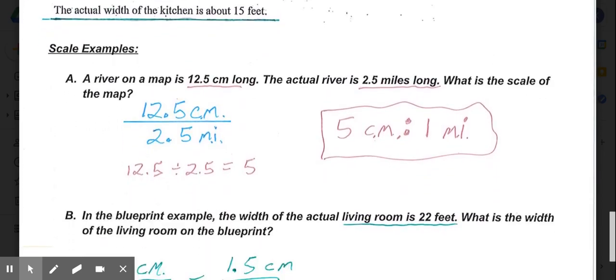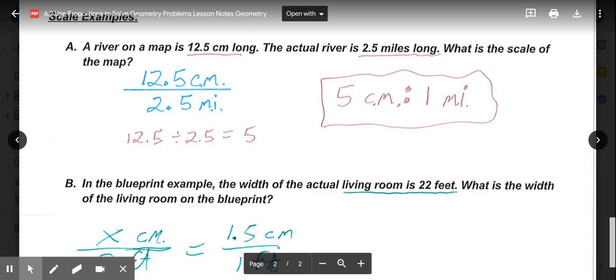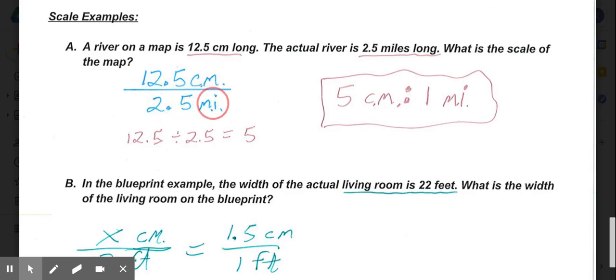Two examples here with scale. In example A, a river on a map is 12.5 centimeters long. The actual river is 2.5 miles long. What is the scale of the map? In this case, we want to divide top and bottom by the denominator. So we know it's 12.5 centimeters on the map, 2.5 miles in real life. 12.5 divided by 2.5 is 5. 2.5 divided by itself on bottom is obviously 1. So our scale is 5 centimeters to 1 mile. So every 5 centimeters on the map is 1 mile in real life.